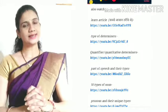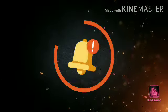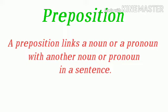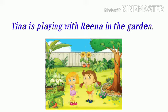So let's go, we have started our video on preposition. First, we know what is the preposition. A preposition links a noun or a pronoun with another noun or pronoun in a sentence. Preposition मतलब पूर्वसर्ग — ऐसे शब्द जो किसी noun या pronoun को एक वाक्य में किसी दूसरे noun या pronoun से जोड़ते हैं, उन्हें preposition कहते हैं। जैसे: Tina is playing with Rina in the garden — यहाँ पे दो preposition का use हुआ है: 'with' और 'in'।